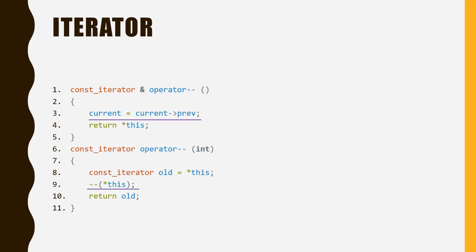Similar to prefix increment and suffix increment, we also have prefix decrement and suffix decrement. With the prefix decrement, we first move the iterator to the previous data element, and then return the iterator that points to the previous data element. For suffix decrement, we first return the iterator that points to the current data element, and then move the iterator to the previous data element. The implementation is also very similar to increment, except that in line three we move to the previous data element, and in line nine we use prefix decrement.